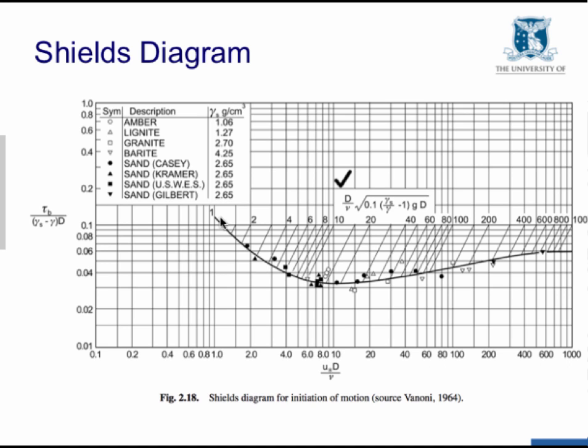But the problem with this relationship is that the dimensionless particle size variable includes the bed shear stress, and the bed shear stress is a function of the shear velocity u star. And this u star at the critical condition is also dependent on the shear stress. So to be able to calculate this variable, we already need to know what the critical shear stress is, but we actually want to use the relationship to determine the critical shear stress. So it's somewhat circular. There was an easy workaround for this and there's a modified curve now which is available for use.